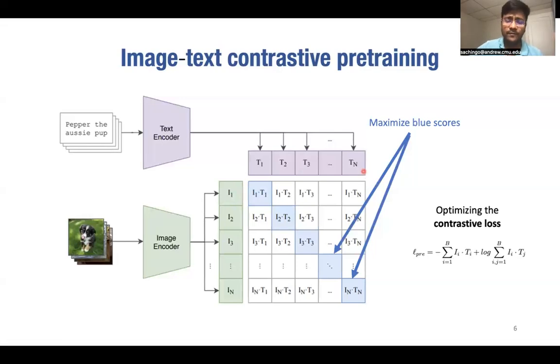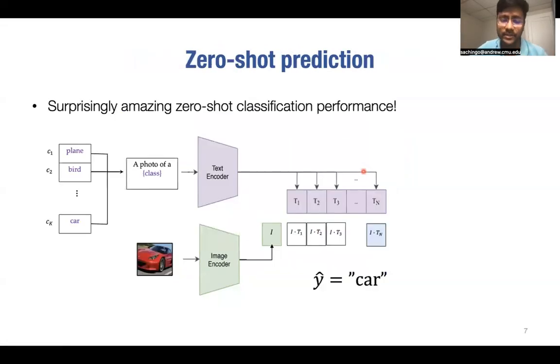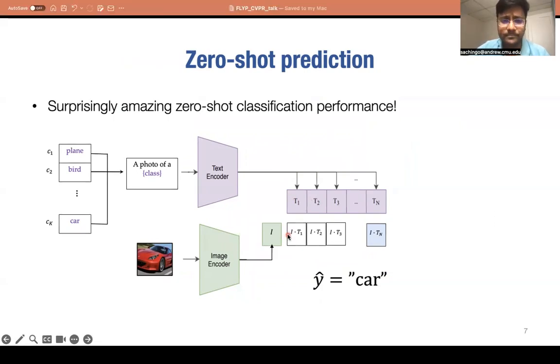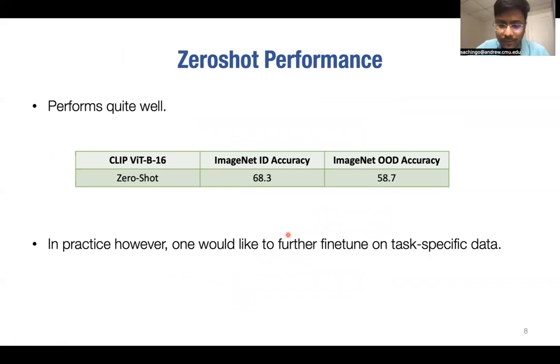Now, this form of training of CLIP allows you to do something called a zero-shot prediction. That is, at the inference time, given an image, you can simply predict its class by using the class names and giving the output as a class which has the maximum similarity with the image embedding. And this zero-shot performance indeed performs quite well. For example, on ImageNet, it gives 68% accuracy without seeing any single training sample. But in practice, one would probably further want to fine-tune it to further have higher accuracies.